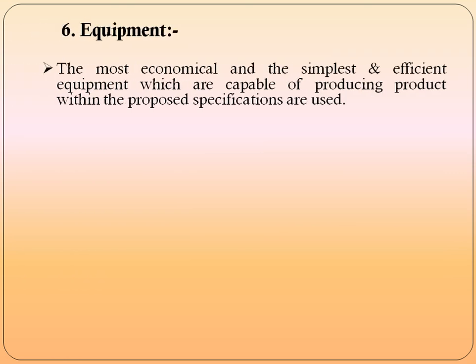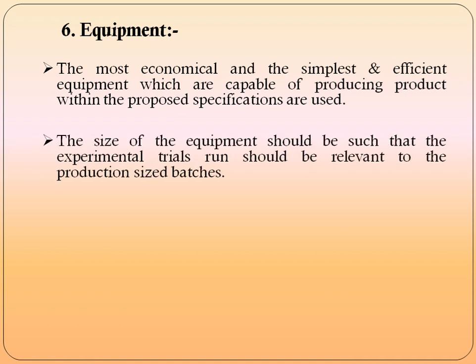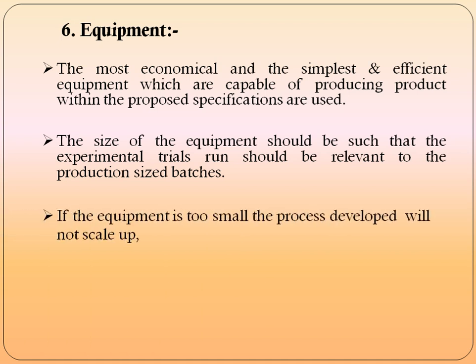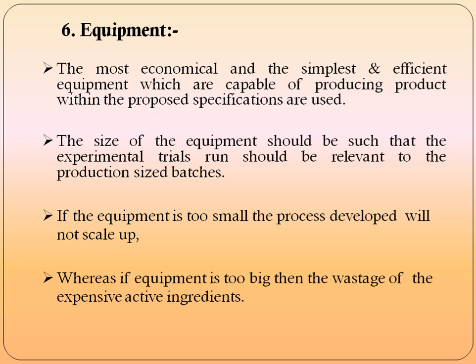Equipment: the most economical, simplest, and efficient equipment capable of producing the product within proposed specifications should be selected. The size of equipment should be such that experimental trial runs are relevant to production-size batches. If the equipment is too small, the developed process will not scale up; if equipment is too big, there is wastage of expensive active ingredients.